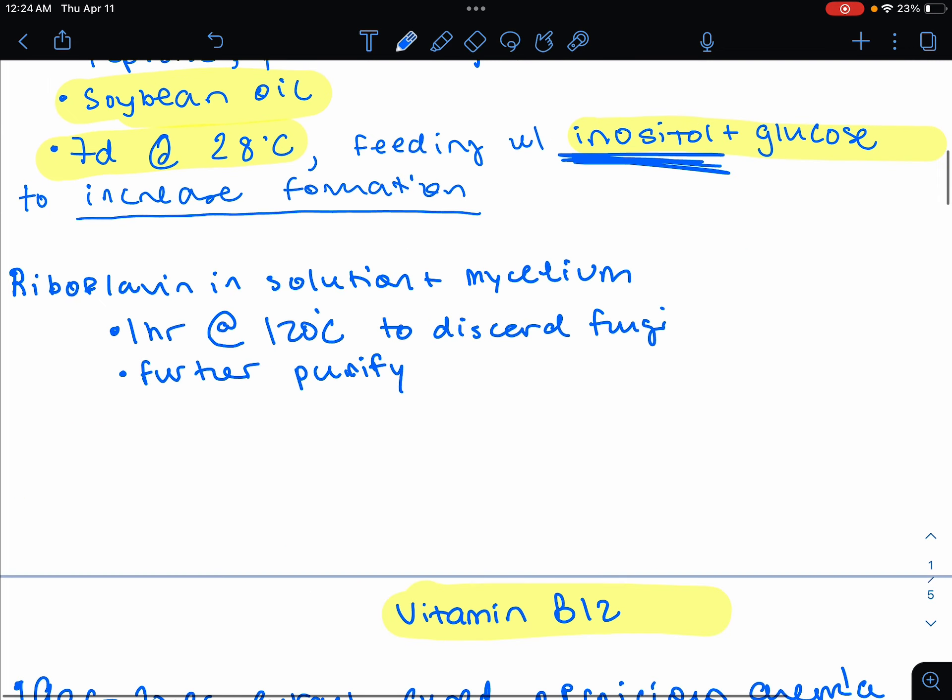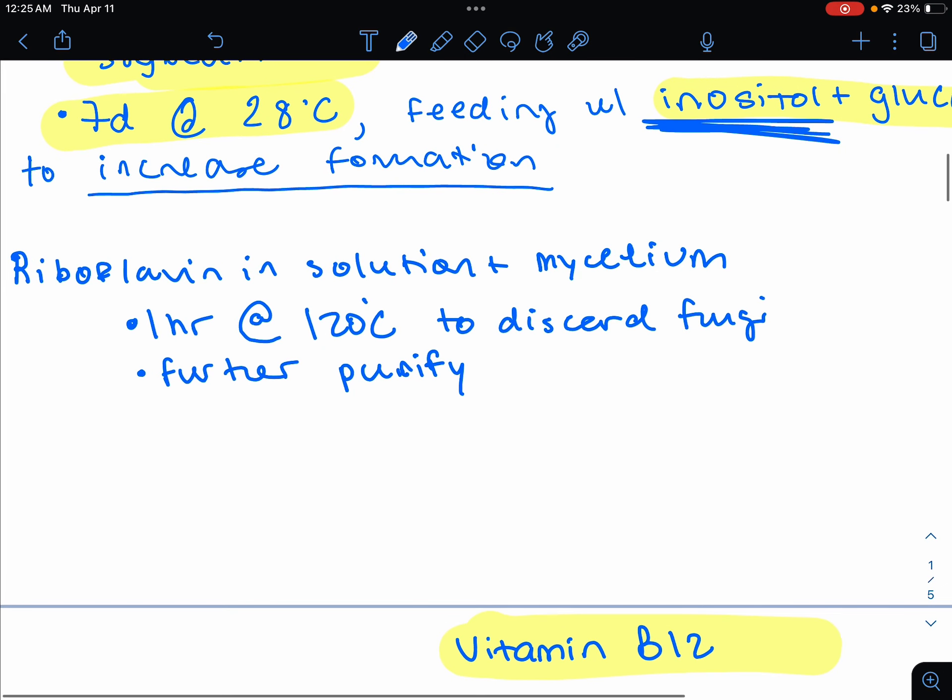How are we going to recover it? So it's bound to the mycelium of the Aspia gossipy, as well as floating around in the solution. So we're going to just use 120 degrees Celsius for one hour to discard the fungi. And then you could just further purify the riboflavin.